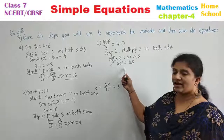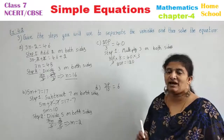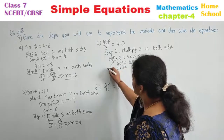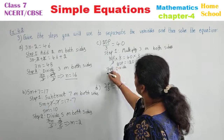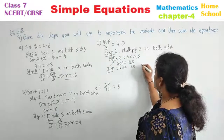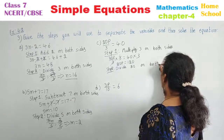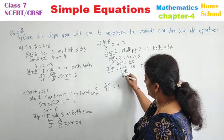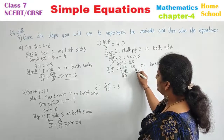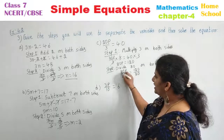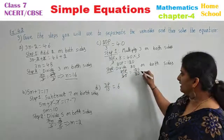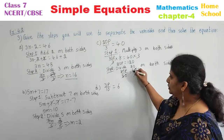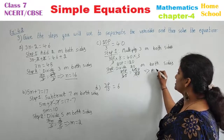Now again observe the variable — a number 20 is multiplied for the variable, so you need to divide. This is your Step 2: Divide 20 on both sides. 20P by 20 is equal to 120 by 20. 20 and 20 get cancelled. 2 sixes are 12. It implies P is equal to 6.